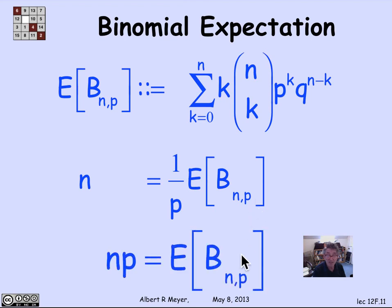In other words, the expectation of B_{n,p} is n times p. And that is the basic formula that we were deriving by first principles without using any general properties of expectation, just the definition of expectation and the stuff that we had already worked out in terms of the binomial theorem.